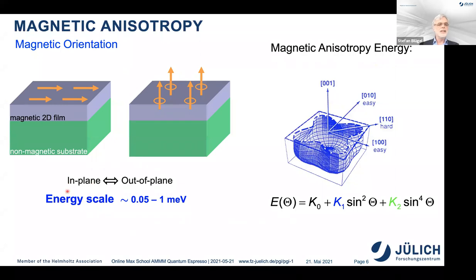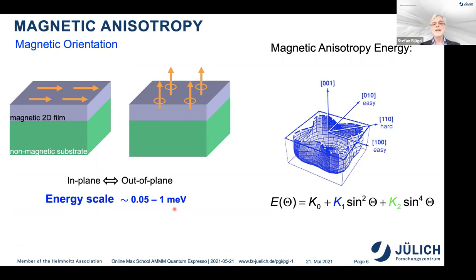The magnetic anisotropy energy scale is about 0.05 microeV to 1 meV — not eV, but meV. This is not a typo. This morning Professor Baroni talked about phonons, which have energy scales of around 100–200 meV at the Brillouin zone edge. Here we are talking about 0.05 microeV to 1 meV.